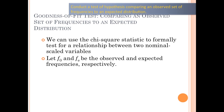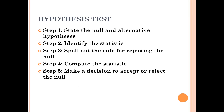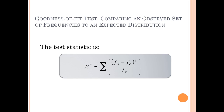F-sub-O is your observed frequencies and F-sub-E is your expected frequencies. For a goodness of fit test, the null hypothesis is that there is no difference between the observed and expected frequencies; the alternative is that there is a difference. You go through the same steps as before: state null and alternative hypotheses, identify the test statistic, spell out the rule of rejection, compute the statistic, and make a decision about the null. This is the equation you'll use.